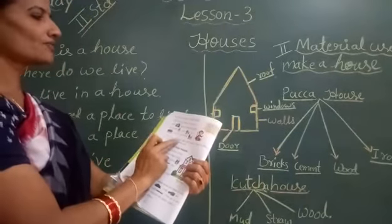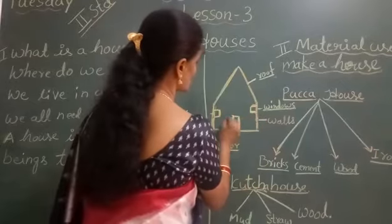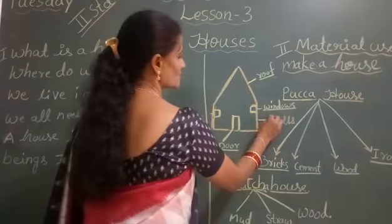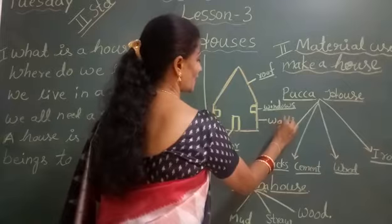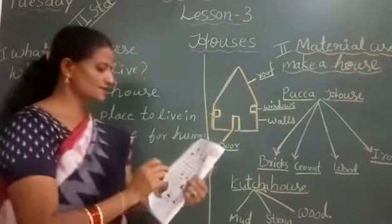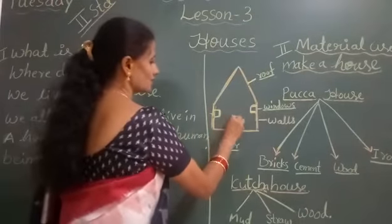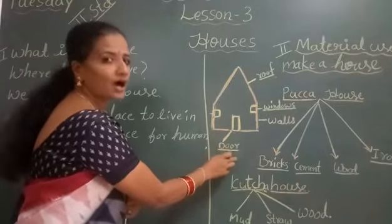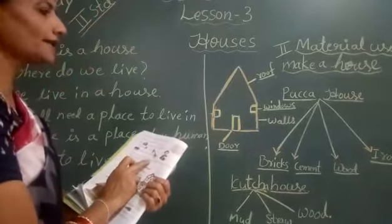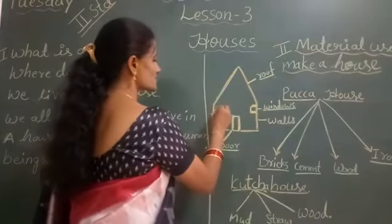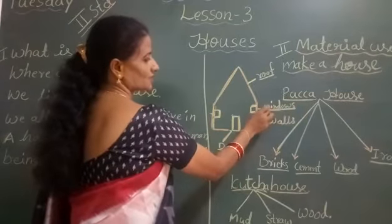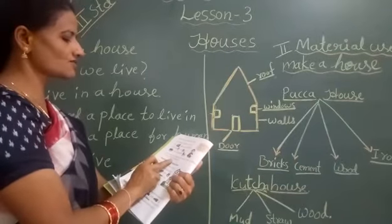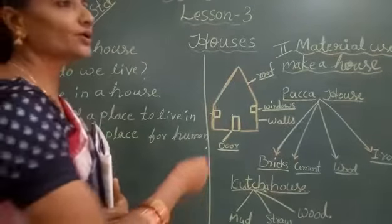A house has a roof and wall. See here — wall. This is a wall, children. What is the spelling of wall? W-A-L-L-S. Door — see here, this is the door. What is the spelling of door? D-O-O-R. And windows — see here, two windows. What is the spelling of windows? W-I-N-D-O-W-S. There are different rooms in a house for different uses.